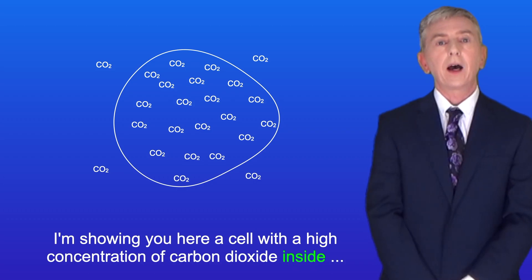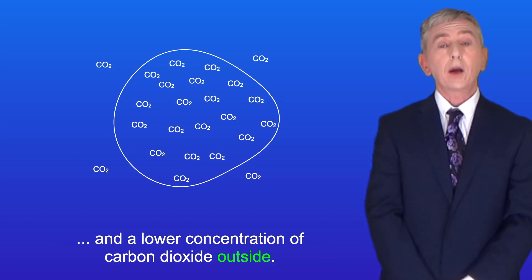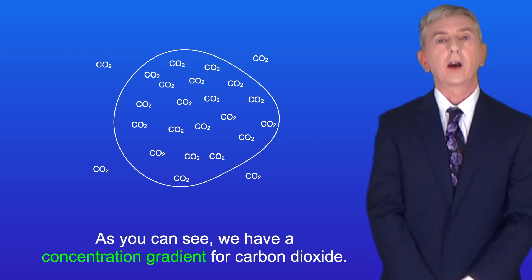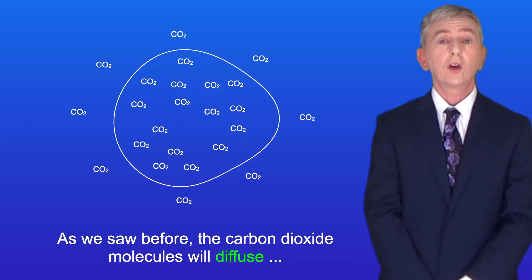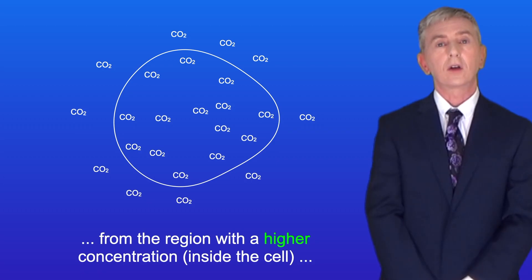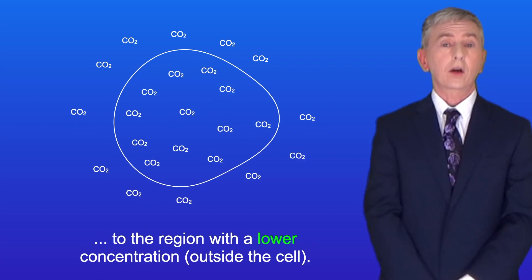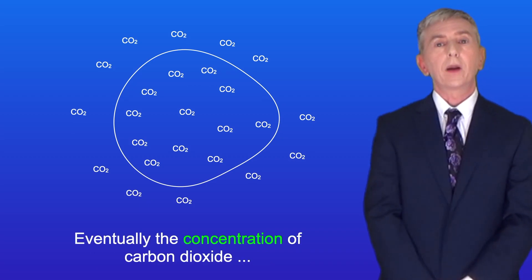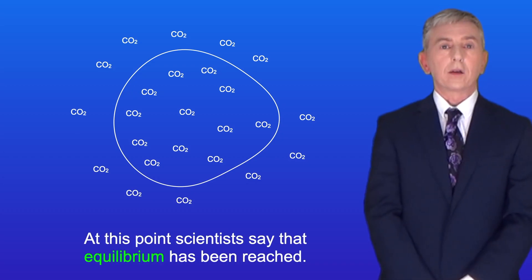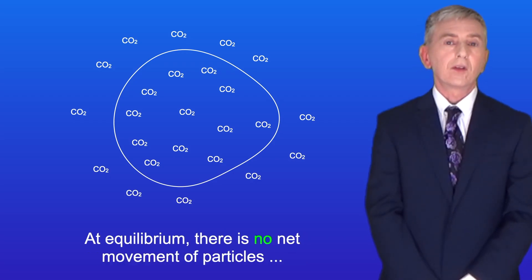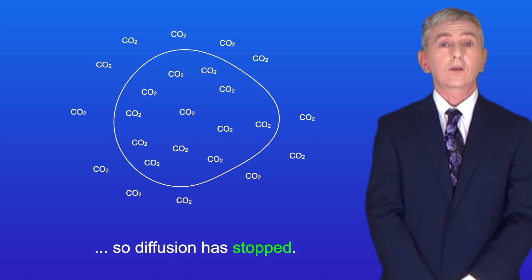I'm showing you here a cell with a higher concentration of carbon dioxide inside, and a lower concentration of carbon dioxide outside. As you can see, we have a concentration gradient for carbon dioxide. So as we saw before, the carbon dioxide molecules will diffuse from the region with a higher concentration, in other words inside the cell, to the region with a lower concentration, in other words outside the cell. And eventually the concentration of carbon dioxide will be the same both inside and outside. At this point, scientists say that equilibrium has been reached. At equilibrium, there is no net movement of particles, so diffusion has stopped.